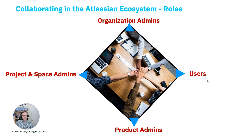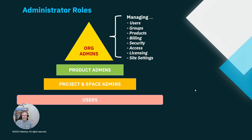All those levels of administrators work together for the good of the end users. In another video, we focused on the org admin role, which is the most senior among the administration roles. Org admins create and onboard users, off-board users across many instances, create groups which are mapped to products to grant users access, and manage security and access settings, licensing, billing, and other overarching site settings that have implications on all products used in that particular instance. So org admins fulfill a very prerequisite role that needs to be in place before product admins and project and space admins can do their job.